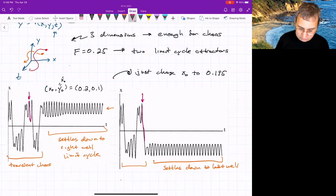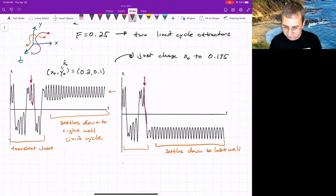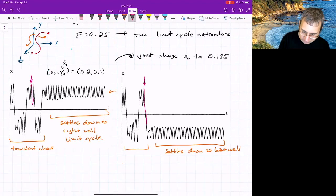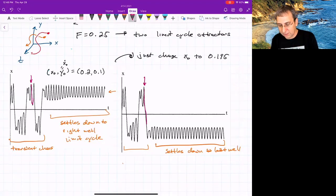So suppose we took this XY plane and just color-coded initial conditions. We could figure out what are the regions that end up in one well versus another well. That would be related to finding the basin boundaries. So there's some basin, some region that leads to the right well settling down in the right well. And there's some basin that leads to settling down in the left well.